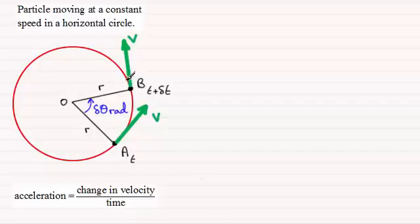Now suppose we take this velocity here and split it into two components. One parallel to this velocity vector here. And the other parallel to AO. So we're going to have something looking like this. That one parallel to V. And this one parallel to AO.